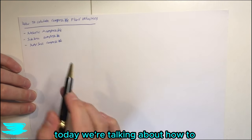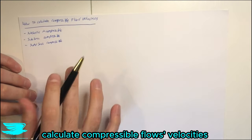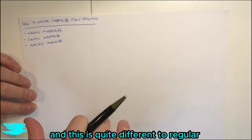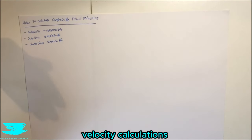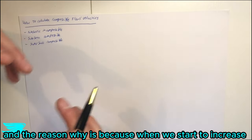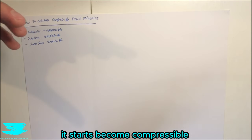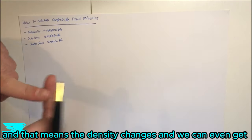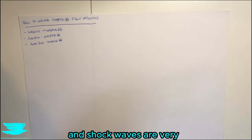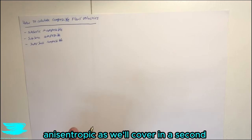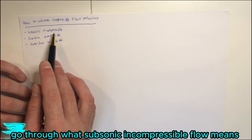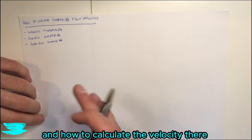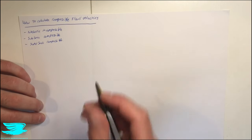What is up amigos? Today we're talking about how to calculate compressible flows and velocities. This is quite different to regular subsonic incompressible flow velocity calculations, and the reason why is because when we start to increase the velocity of our fluid it starts to become compressible. That means density changes and we can even get shock waves forming. First, we'll go through what subsonic incompressible flow means and how to calculate the velocity there.